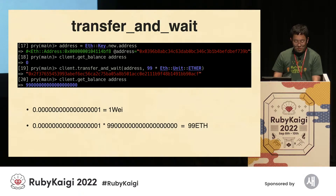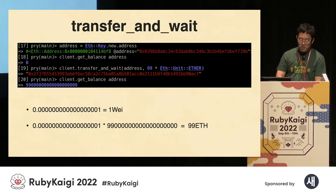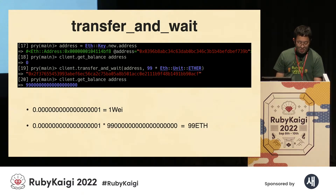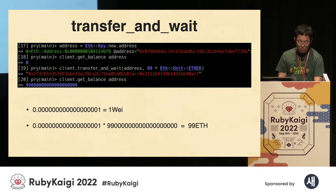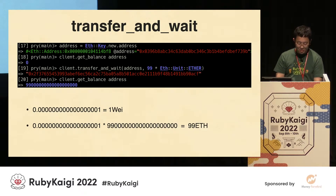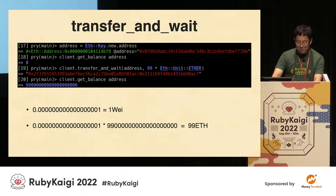Let's get the balance. We can check the balance of the address. This is about the unit of ETH. Wei is the smallest unit. In this result, the calculation shows 99 ETH.